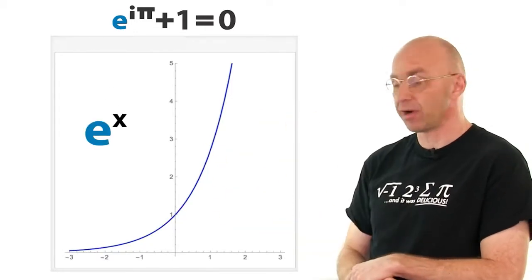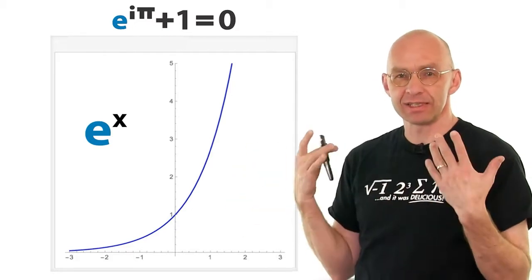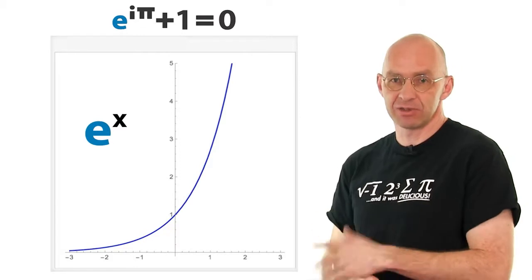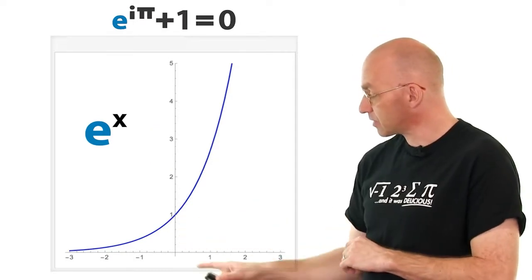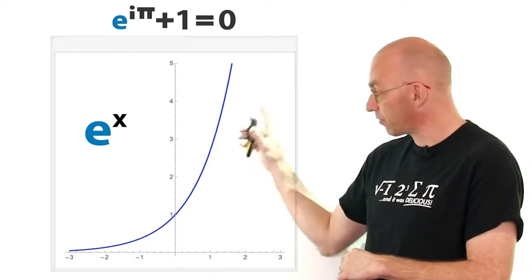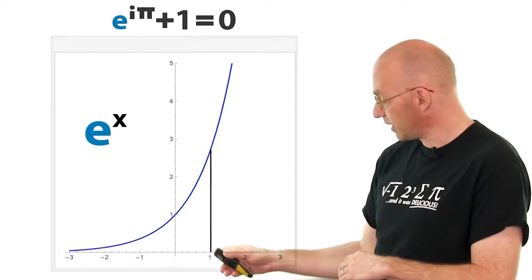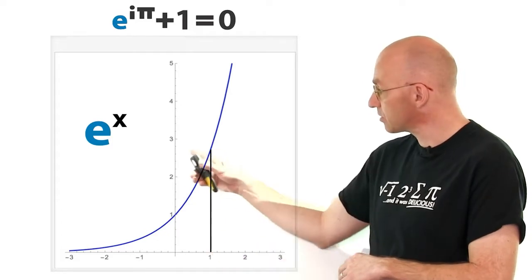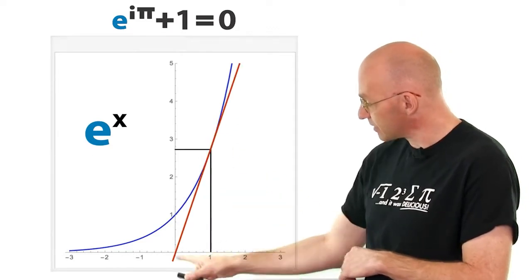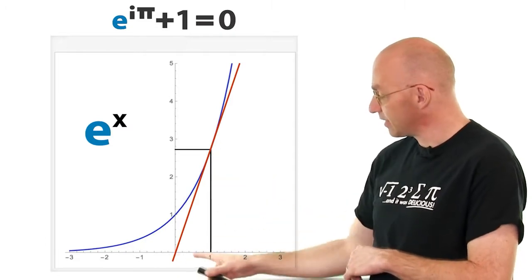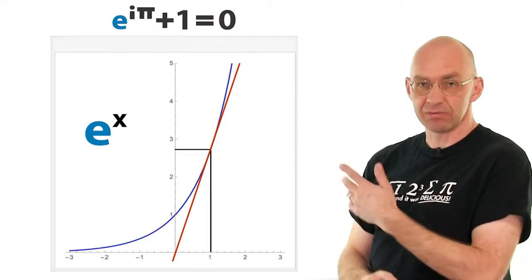So there it is — that's e to the power of x. When people talk about the exponential function, they actually mean e to the power of x. The slope at this point is the same as the function value, and that's supposed to be the same for all points. At x=1, e to the power of 1 is just e, about 2.7. If we put in the tangent line, it passes through 0, so the slope is e divided by 1 — which is e — equal to the function value. It works everywhere.